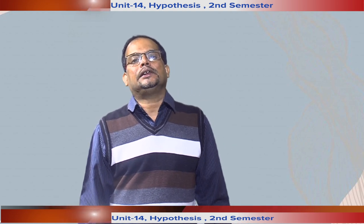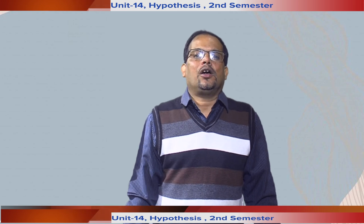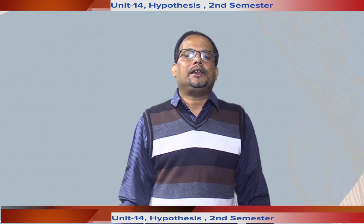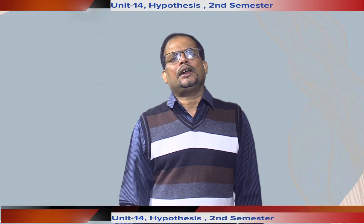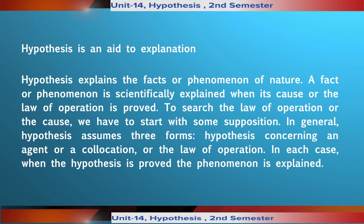In experiment, we artificially reproduce things or events under known conditions. Such artificial reproduction requires some supposition to be verified for each object. Thus, observation and experiment are guided and controlled by hypothesis. Hypothesis is also an aid to explanation. Hypothesis explains the facts or phenomena of nature. A fact or phenomenon is scientifically explained when its cause or the law of operation is found. To search the law of operation or the cause, we have to start with some supposition. In general, hypothesis assumes three forms: hypothesis concerning an agent, collocation, or the law of operation. When the hypothesis is proved, the phenomenon is explained.